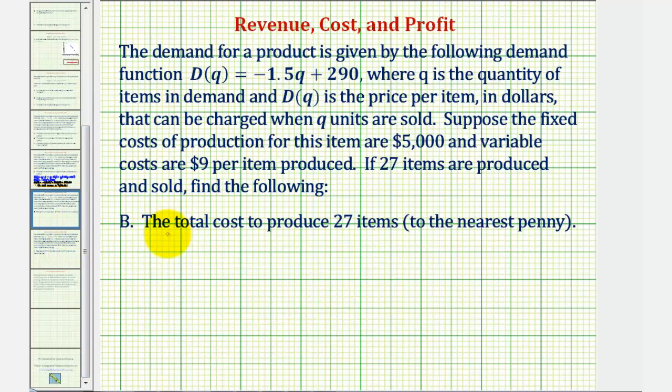Now for part B, we were asked to find the total cost to produce 27 items, where the total cost consists of the fixed cost and the variable cost. So the total cost, C of Q, would be equal to the fixed cost of $5,000 plus the variable cost of $9 per item, so we'd have plus 9 times Q.